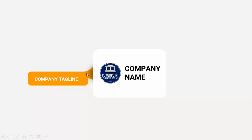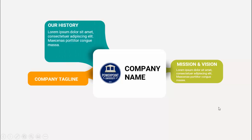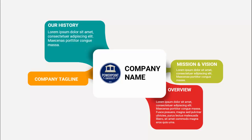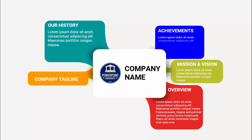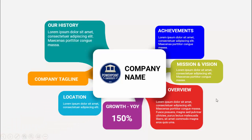You can add the company tagline with a shadow effect. On the next click you can add the company vision, then talk about the company history and overview. You can also display the company's achievements, and then discuss the company's year-on-year growth percentage.